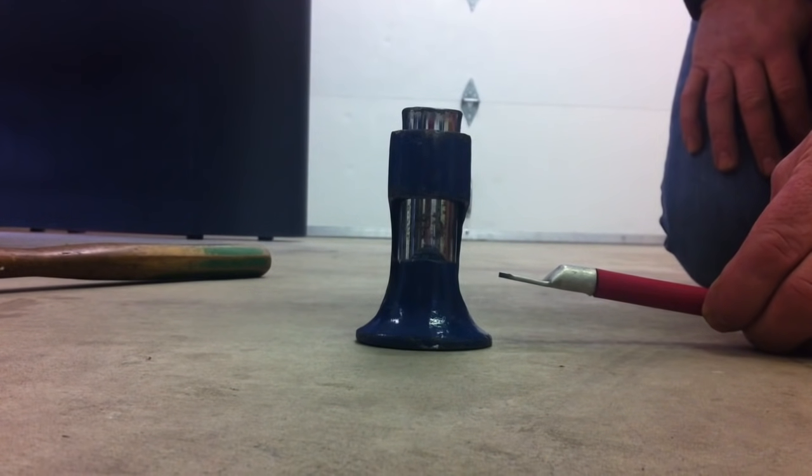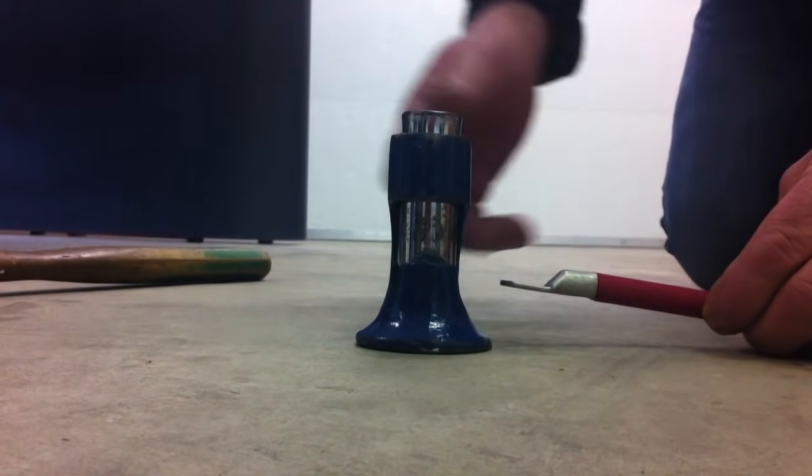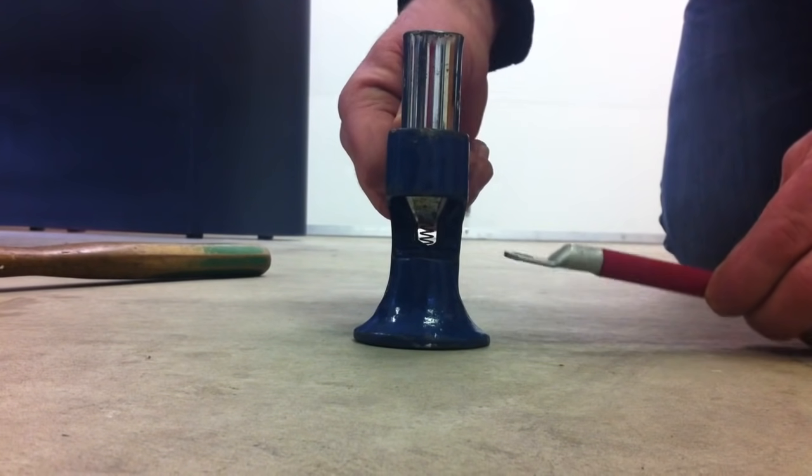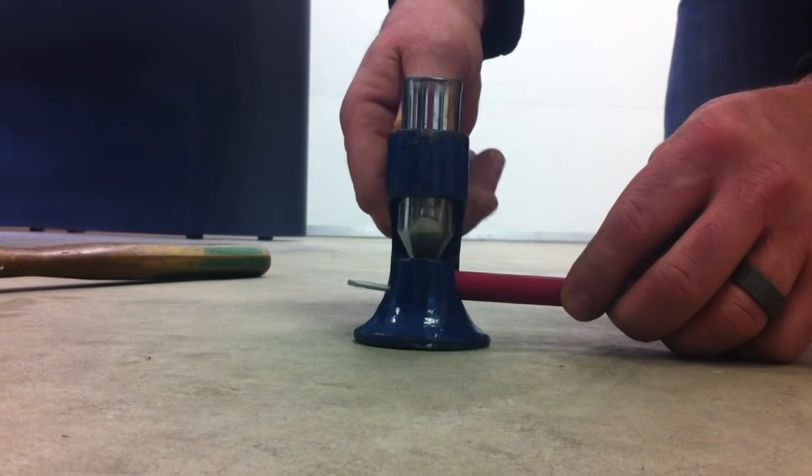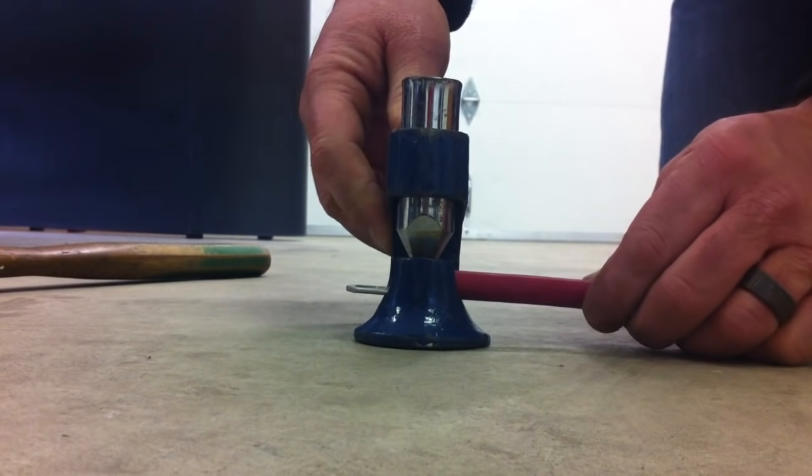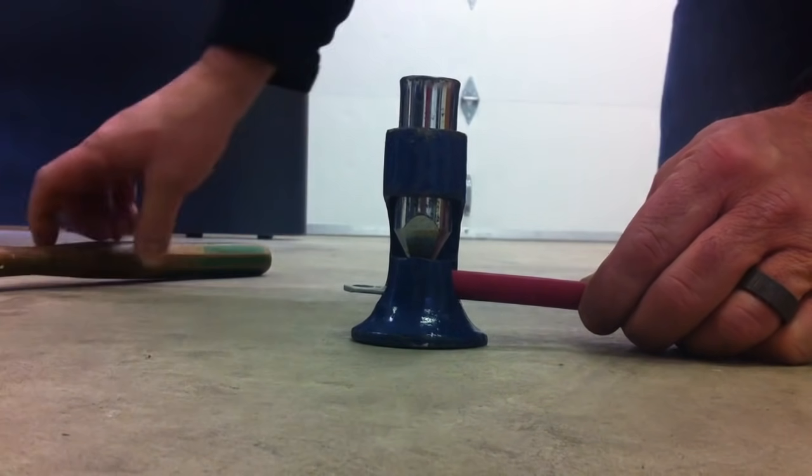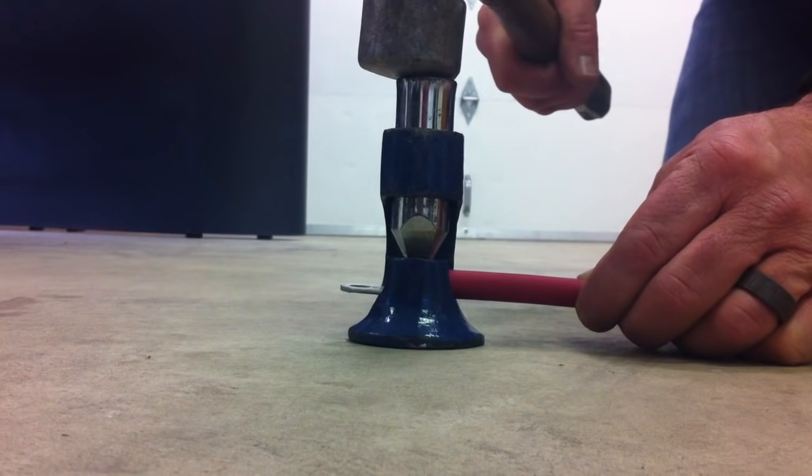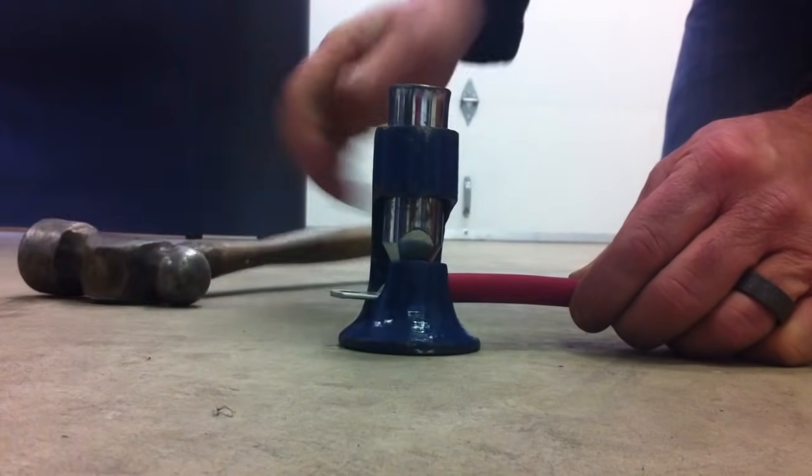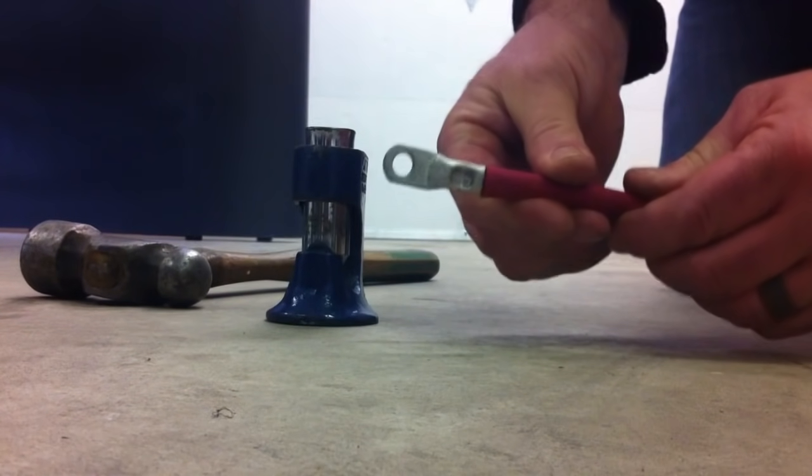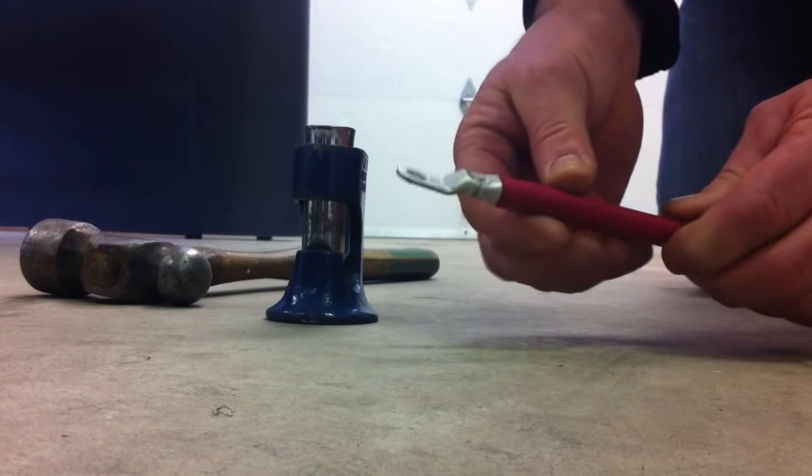Now that we've got our insulation stripped and our cable and our lug in place we're going to go into our crimper. We're going to place the lug into the crimper, make sure that the cable is butted in tight. We'll use our hammer and we're just going to give it one blow. And as you can see we get a nice firm crimp.